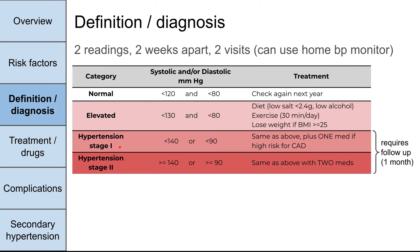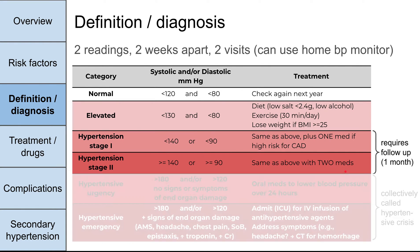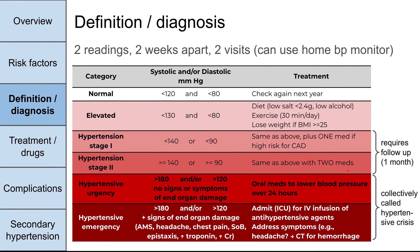Stage 2 hypertension is greater than 140 systolic or greater than 90 diastolic. We recommend the same lifestyle treatment — diet, exercise, weight loss — this time with two medicines. Stage 1 and stage 2 hypertension both require follow-up after you start those medicines.